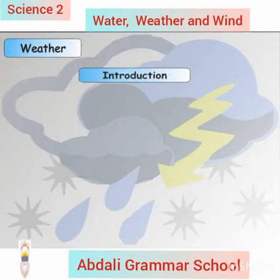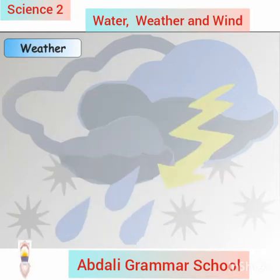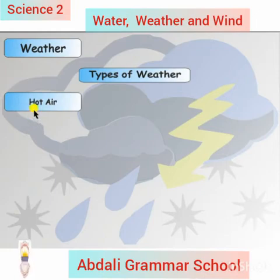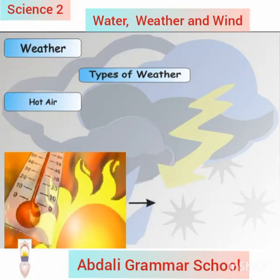Weather introduction: weather is what the air around us is like. Types of weather: there are many types of air, which means weather. Firstly, we will discuss about hot air weather. The air can be hot, as in summer.